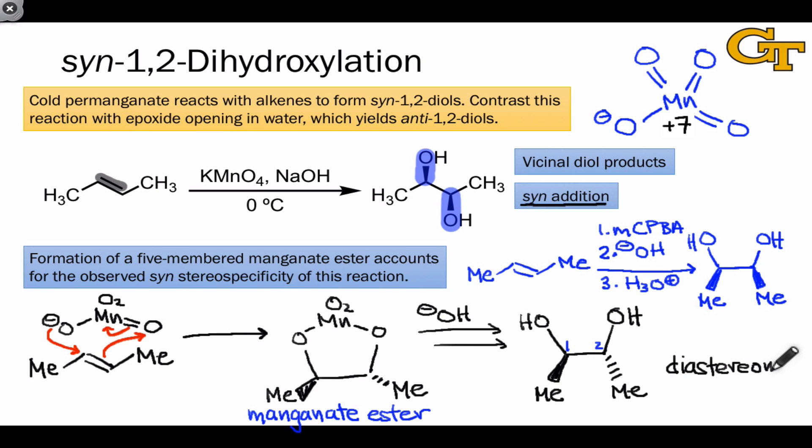These two methods are complementary in the sense that epoxidation followed by opening leads to one diastereomer of the vicinal diol, while syn-dihydroxylation leads to the other diastereomer of the vicinal diol.